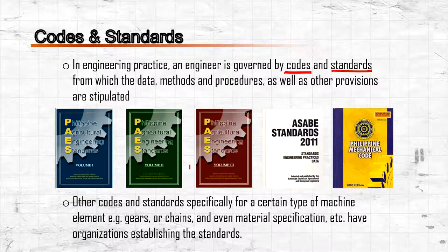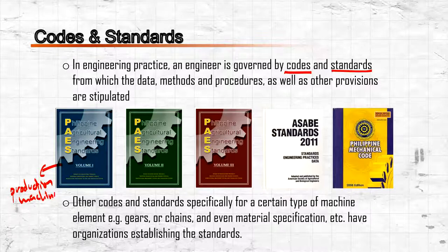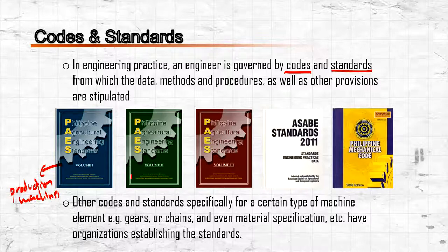Volume One covers production machineries — for example, moldboard plows, rotavators, and other machineries for agricultural production operations.